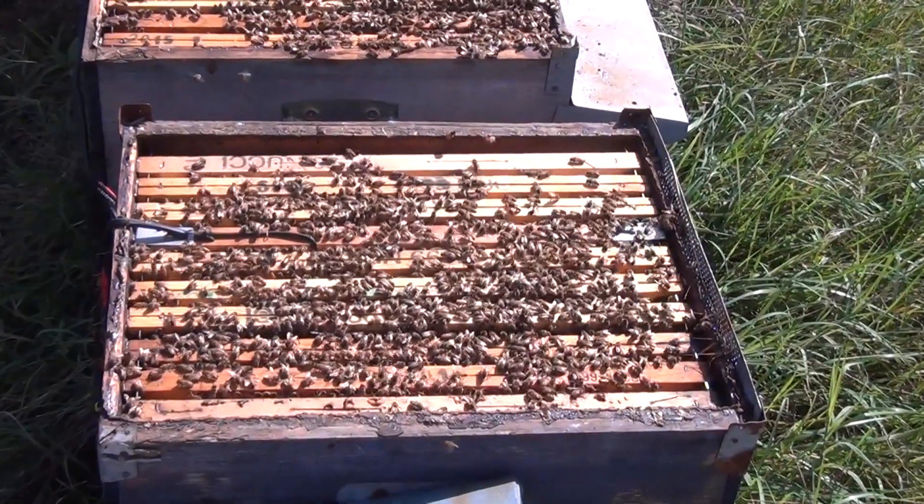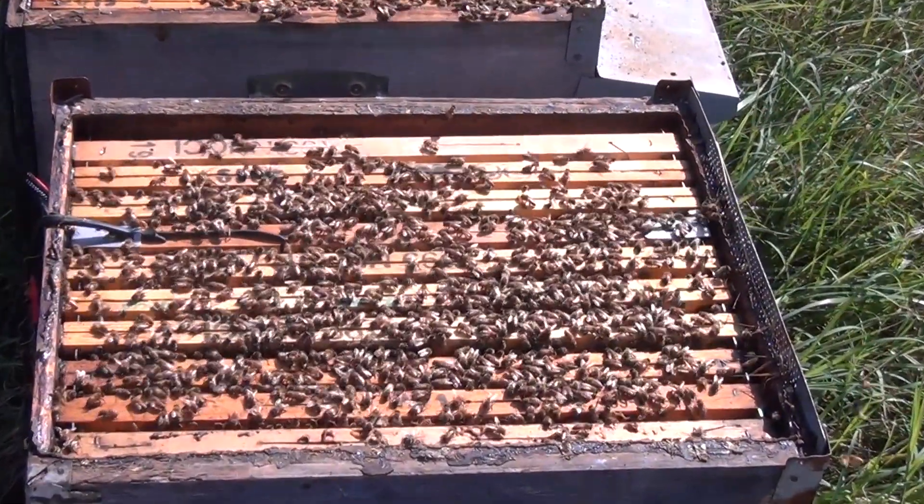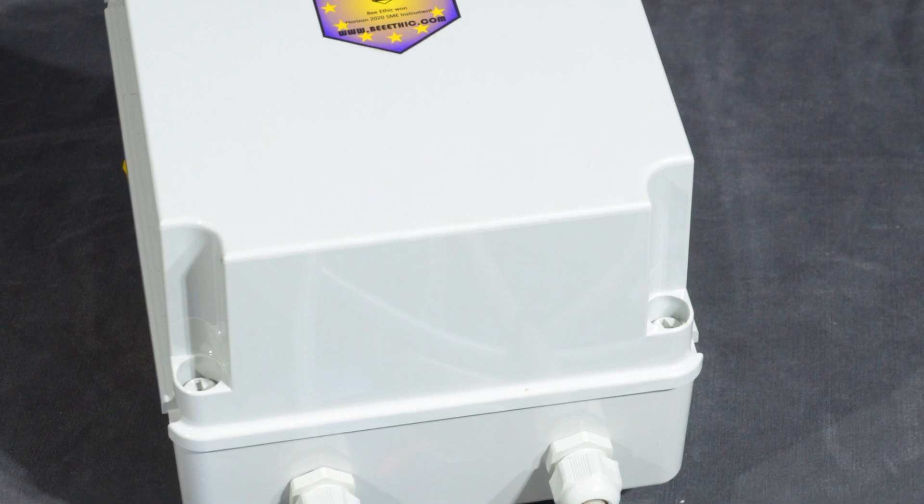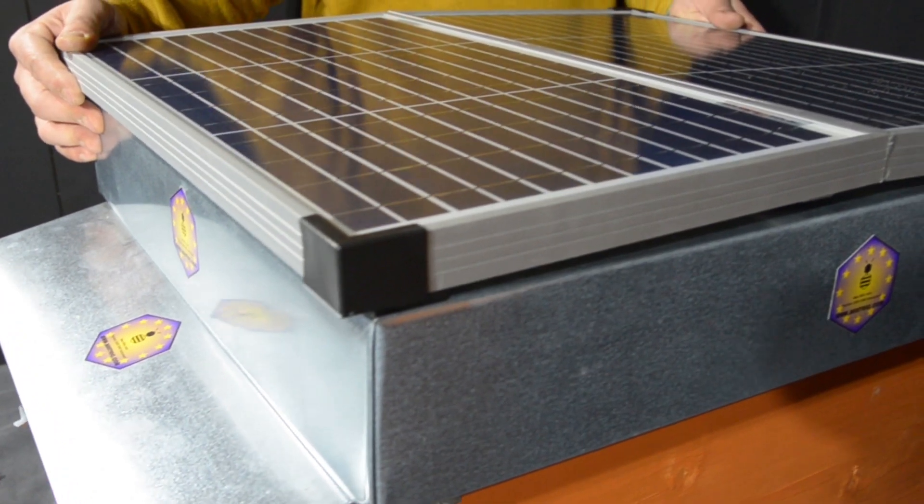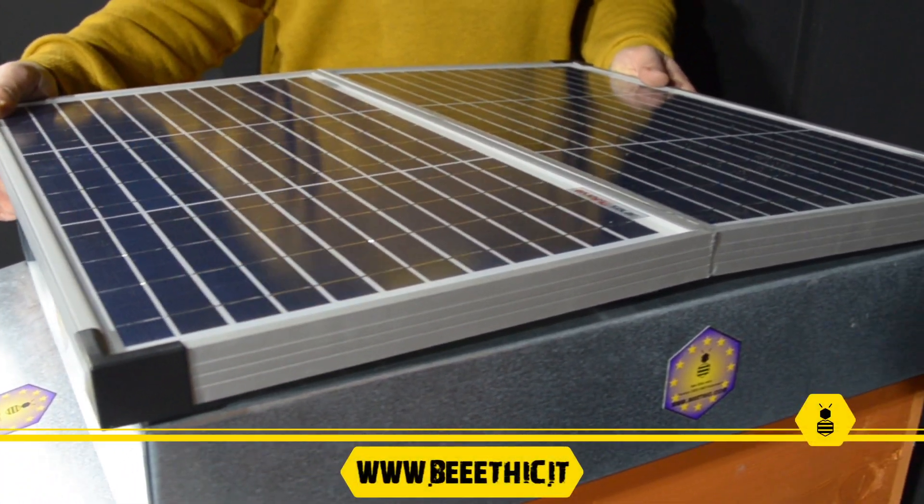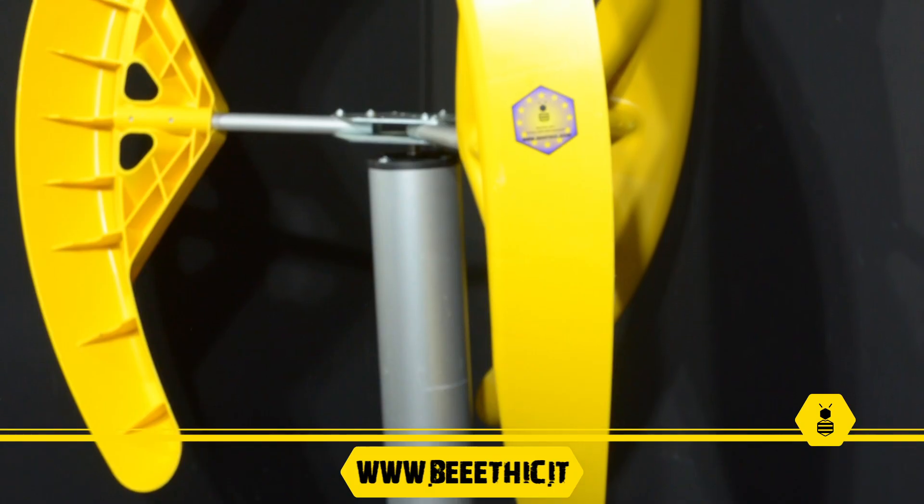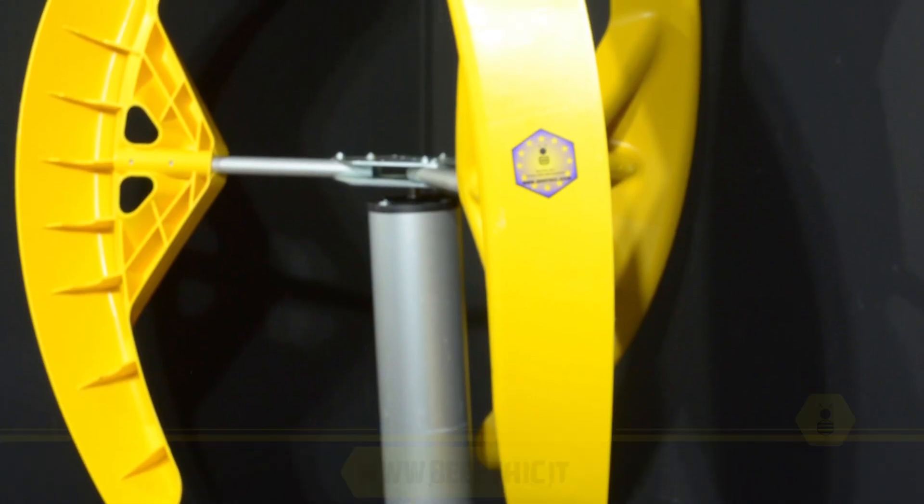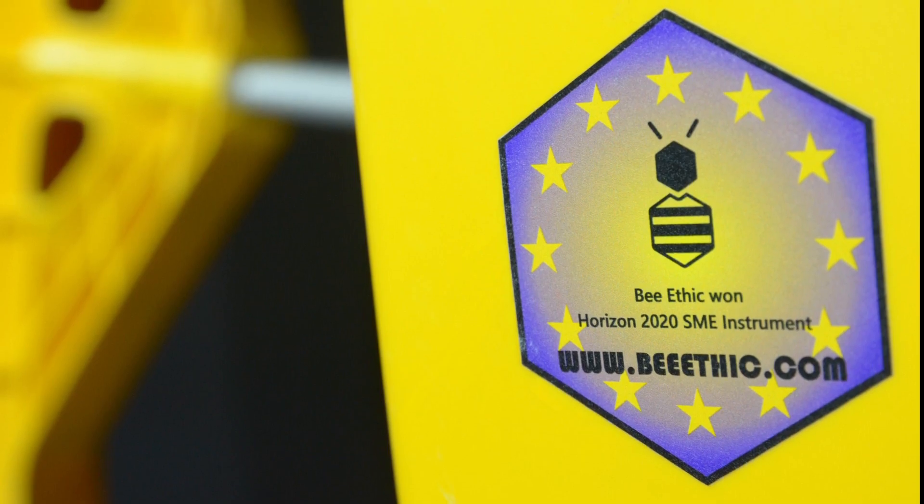BeeThic can be powered in many ways: connection to the grid via transformer, solar panel and batteries for nomadism, or even a wind turbine. Contact us and discover how to become a 2.0 beekeeper.